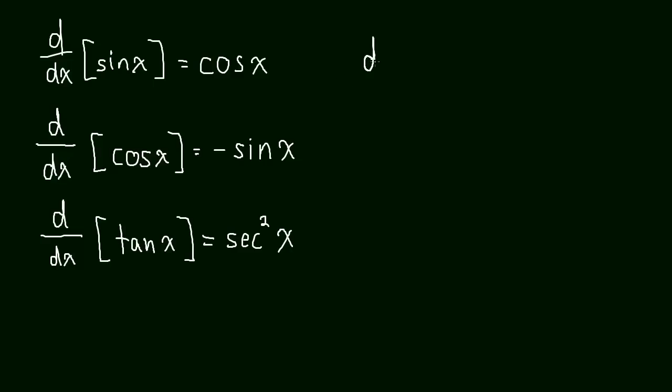Now the derivative with respect to x of secant of x is equal to secant x times tangent x. So pretty interesting. It's pretty interesting that this is what it comes out to be.